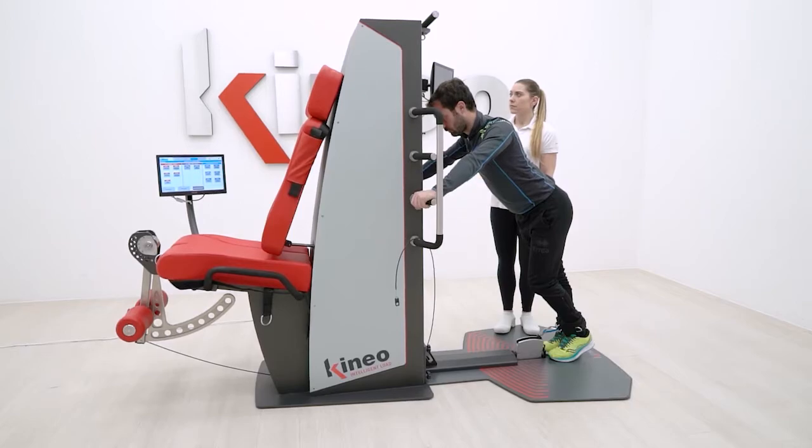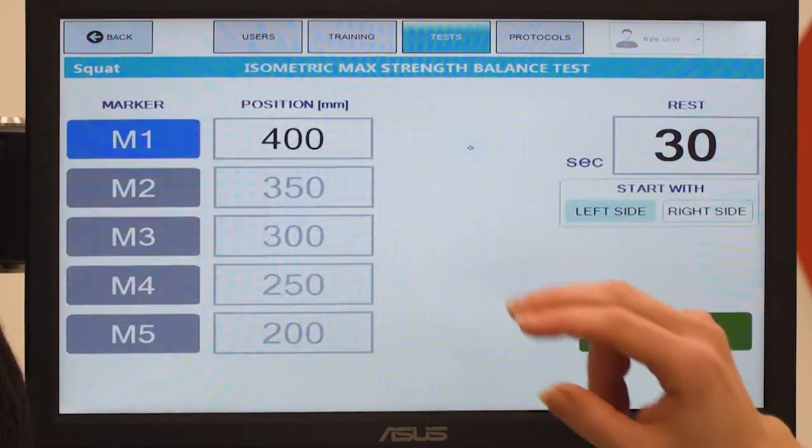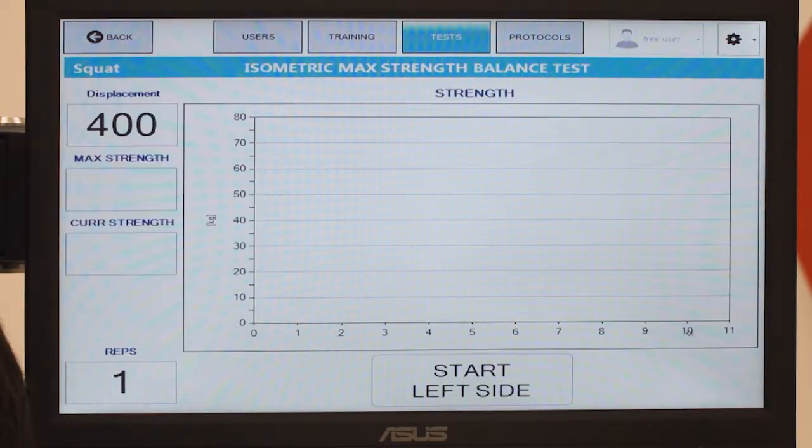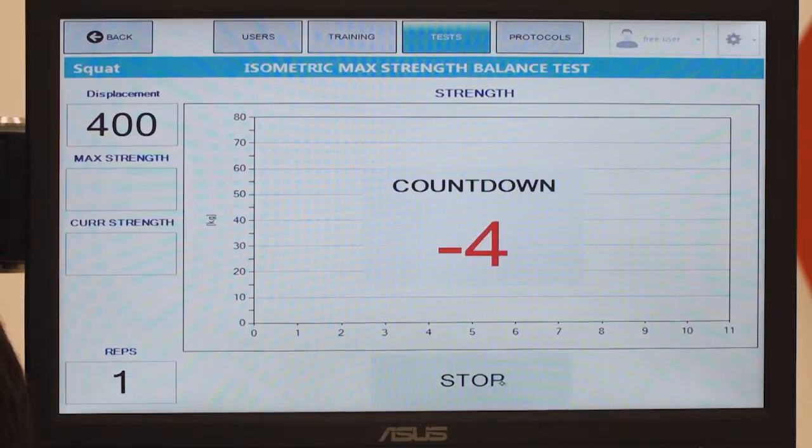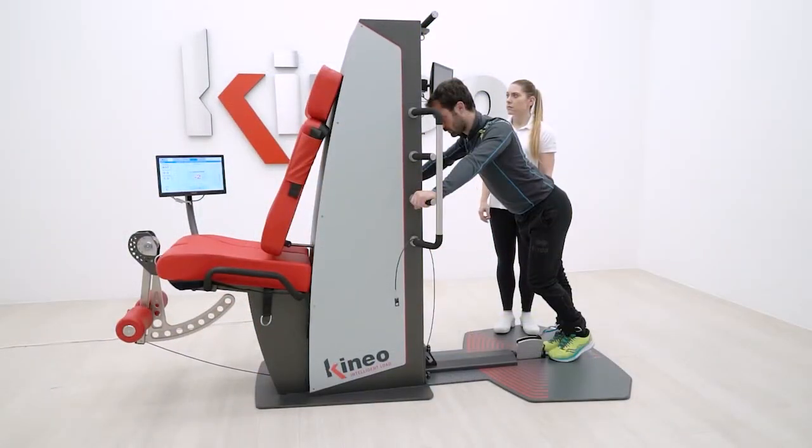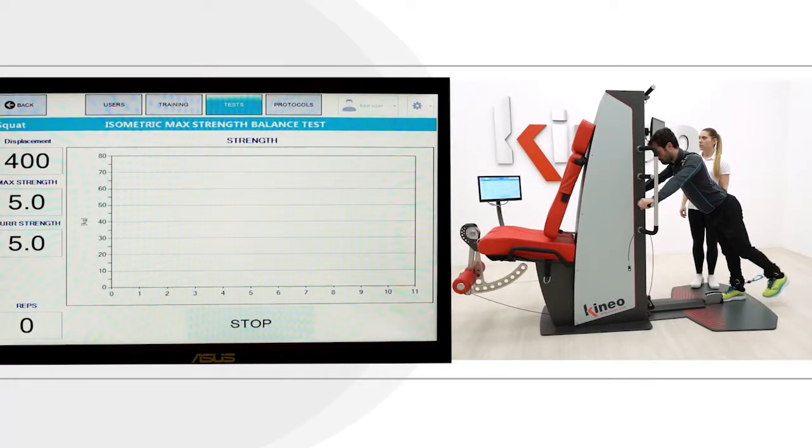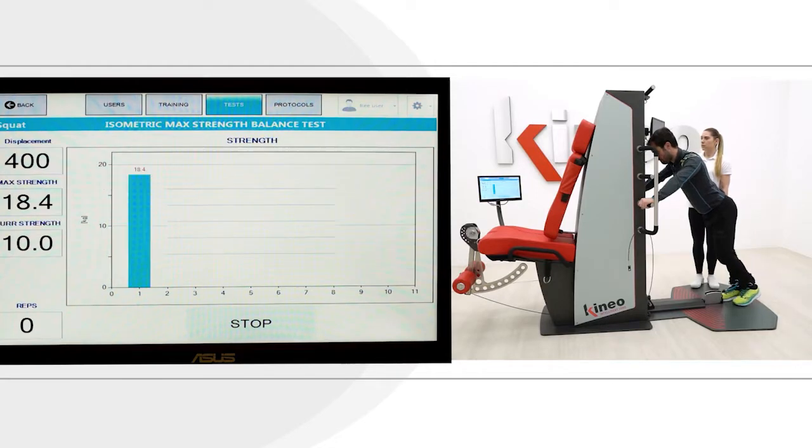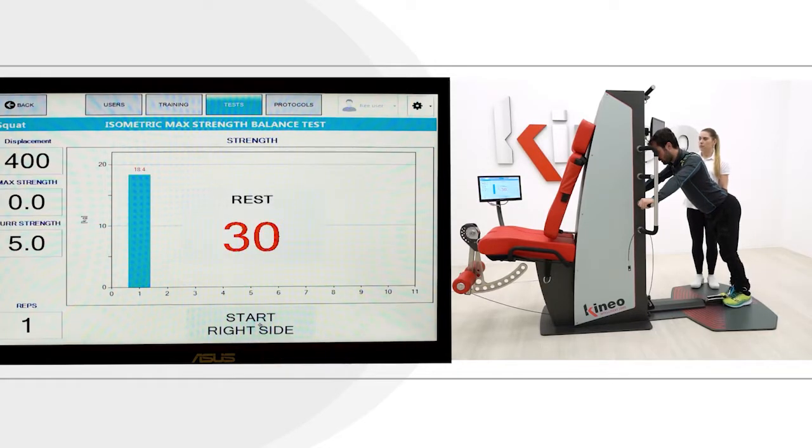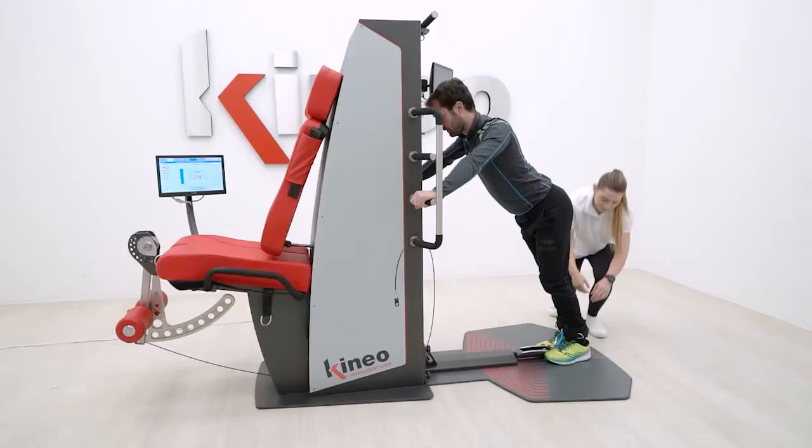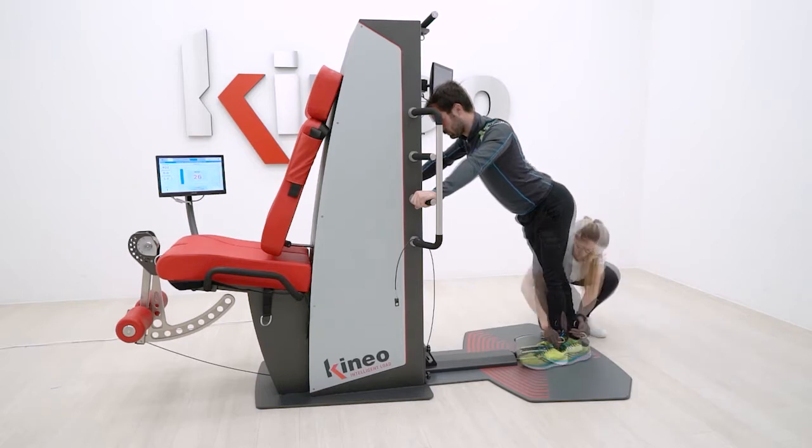The isometric test on Kineo is performed by choosing the isometric max strength balance test while standing on one leg. With the cable attached to the ankle, the option balance will test the non-injured lower limb first and then the other limb during an isometric maximal contraction with the knee completely extended.